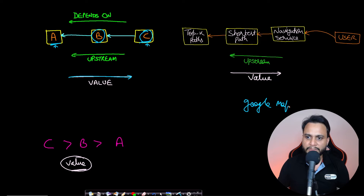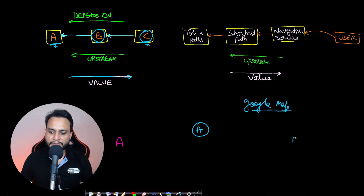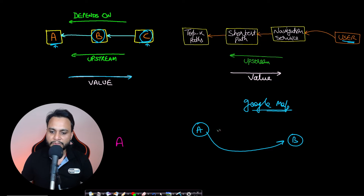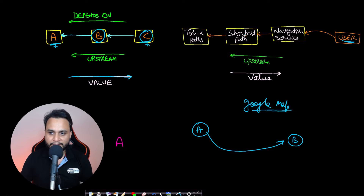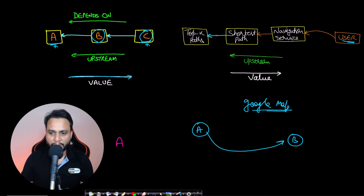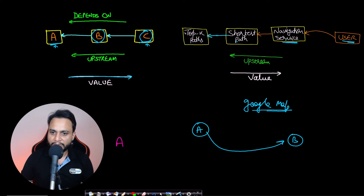Let's take an example of Google Maps. Say you are trying to navigate from point A to point B — the user asks Google Maps to find the shortest or minimum cost path. The user calls the navigation service, the navigation service calls the shortest path service, and the shortest path service in turn calls the top-K paths service, which it then filters from among the top K paths. So the navigation service is dependent on the shortest path service, which is dependent on the top-K paths service.